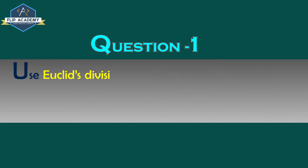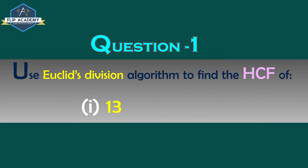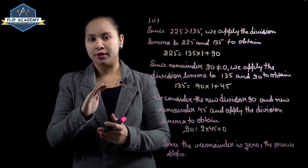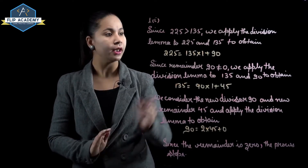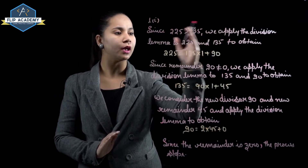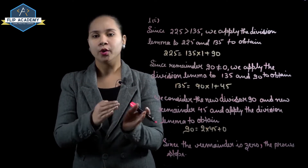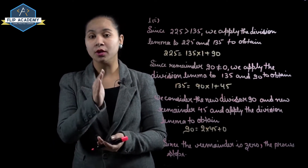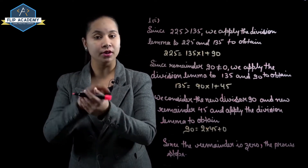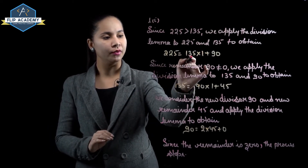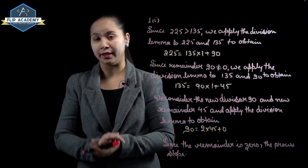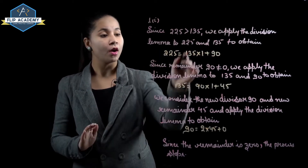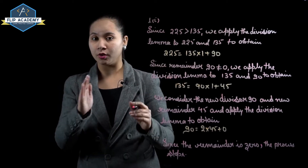Real numbers, Exercise 1.1, Question 1: Use Euclid's division algorithm to find the HCF of 135 and 225. Since 225 is greater than 135, we apply the division lemma to 225 and 135. The division rule states: dividend = divisor × quotient + remainder. So 225 = 135 × 1 + 90. Here 225 is the dividend, 135 is the divisor, 1 is the quotient, and 90 is the remainder.